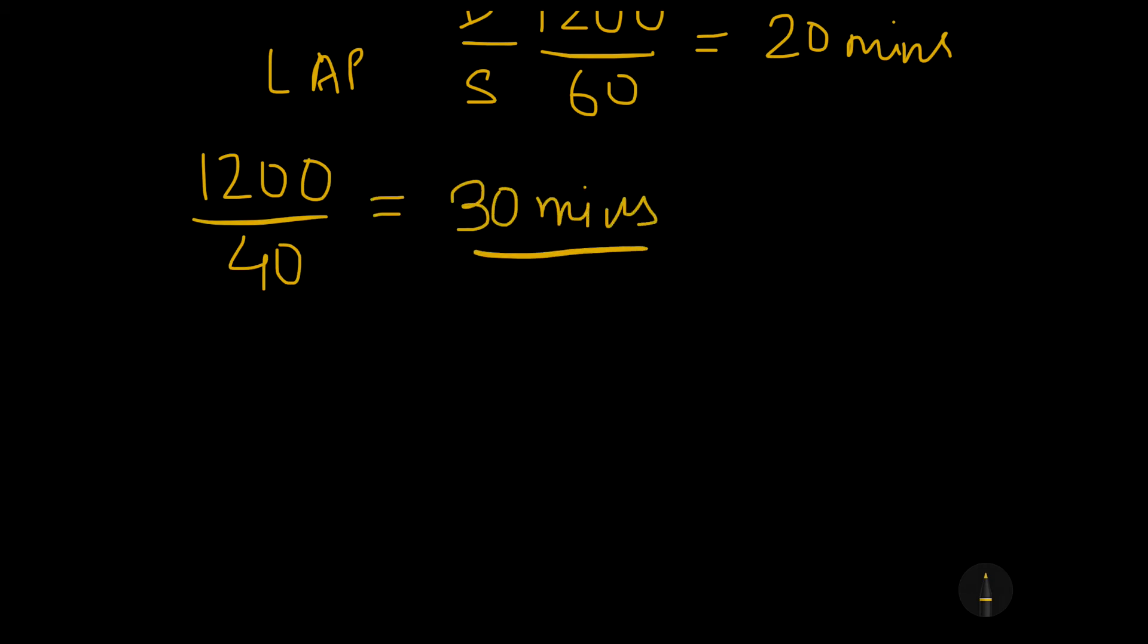Now if you would go by certain books or Google, you will see that for circular tracks there's a separate chapter and then there are lots of formulas related to the LCM of time taken, dividing certain things by certain things and whatnot. So why to memorize these things unnecessarily when we can understand the concept. So let's understand the concept here.